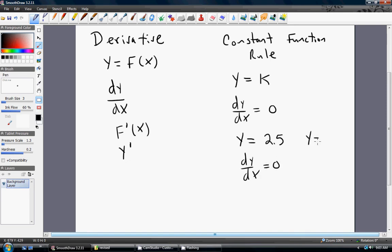If y equals 4, the derivative is 0. So the derivative of a constant function here is always 0. All right, let's move on to the next rule.